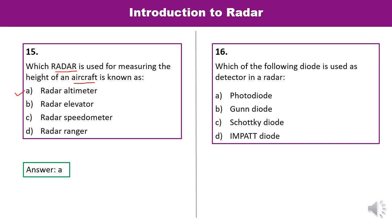Question 16: Which of the following diodes is used as a detector in radar? In the detailed block diagram of a radar transmitter-receiver, there is a detector unit. The IMPATT diode is used in that particular case — also used in many other applications, but commonly used in low-power radar applications. So D is the correct answer.